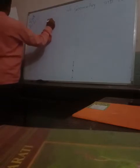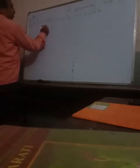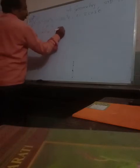Now the seventh one. See all of you: sin raised to 4 theta minus cos raised to 4 theta is equal to 1 minus 2 cos squared theta. Now the LHS is sin⁴θ - cos⁴θ. We can write this as (sin²θ)² - (cos²θ)², which is of the form A squared minus B squared.